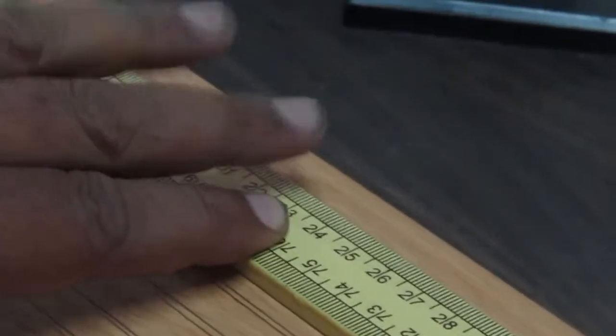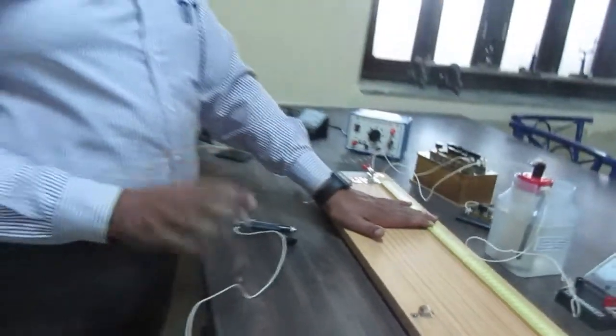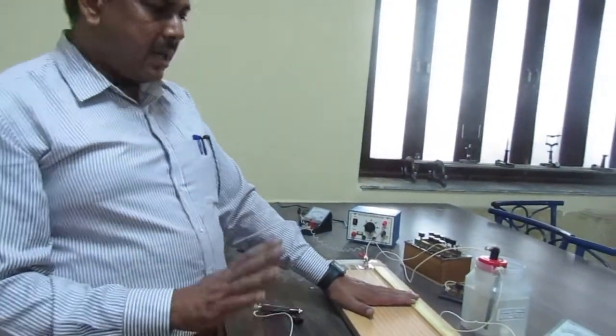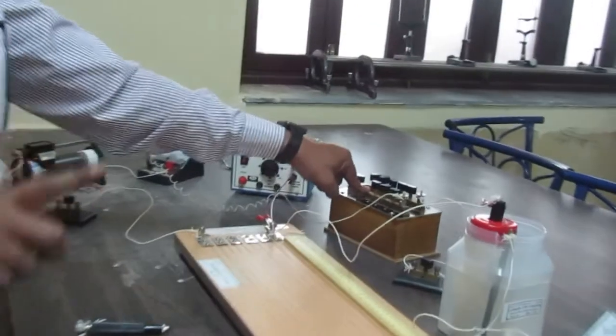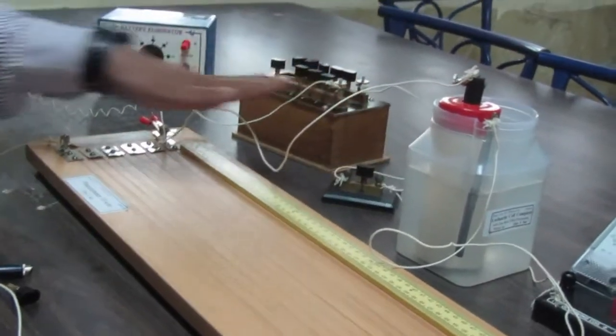Now if you have this formula: small r (internal resistance) equals L1 minus L2 divided by L2 multiplied by R (capital R). Capital R means this resistance. L1 means when the key is open and L2 means when the key is closed, multiplied by R.